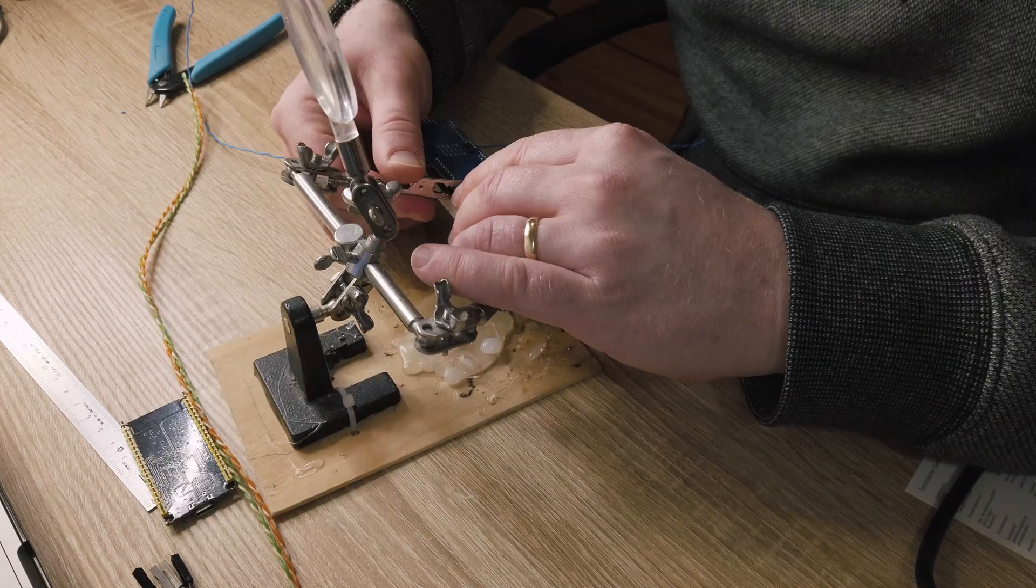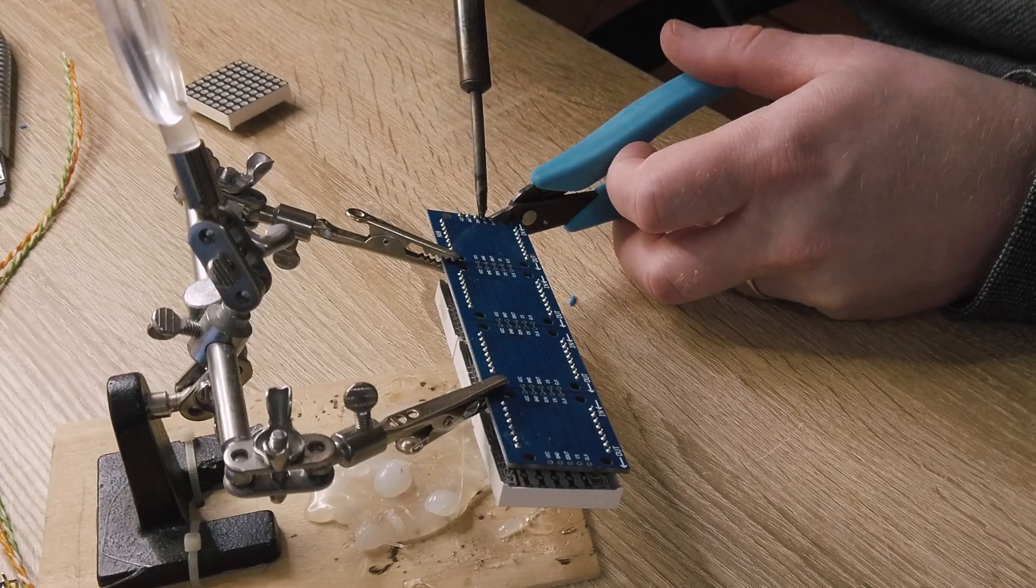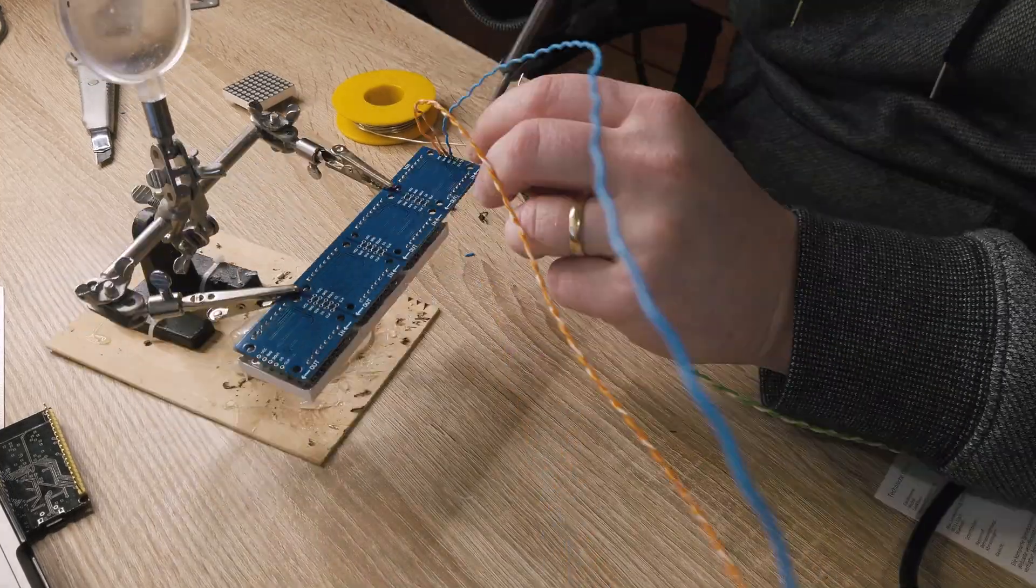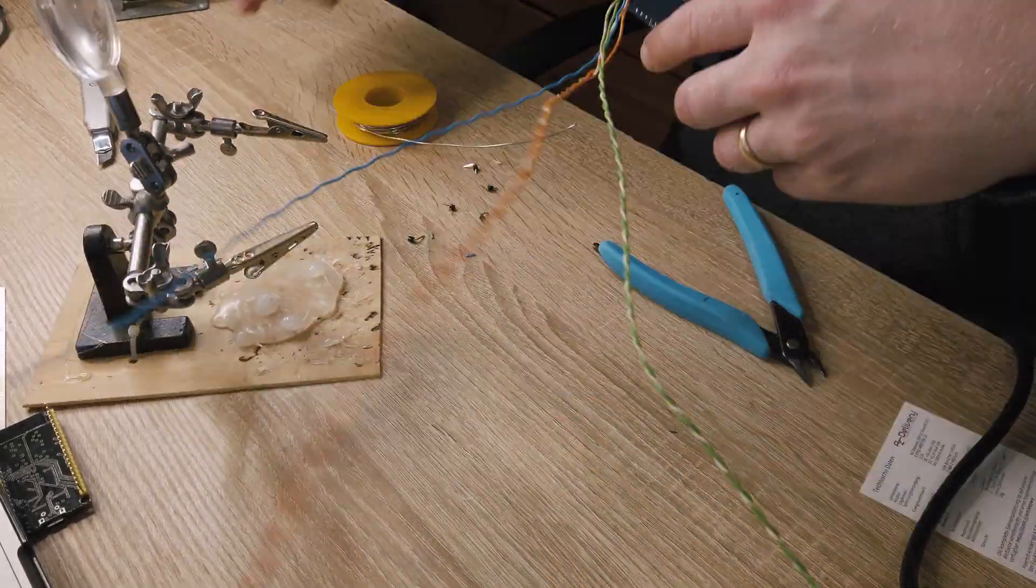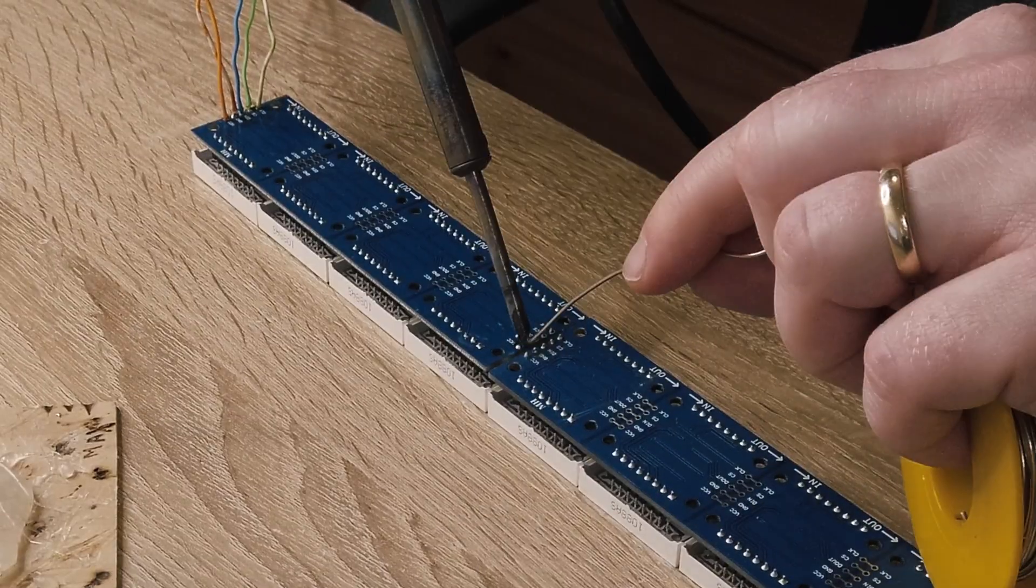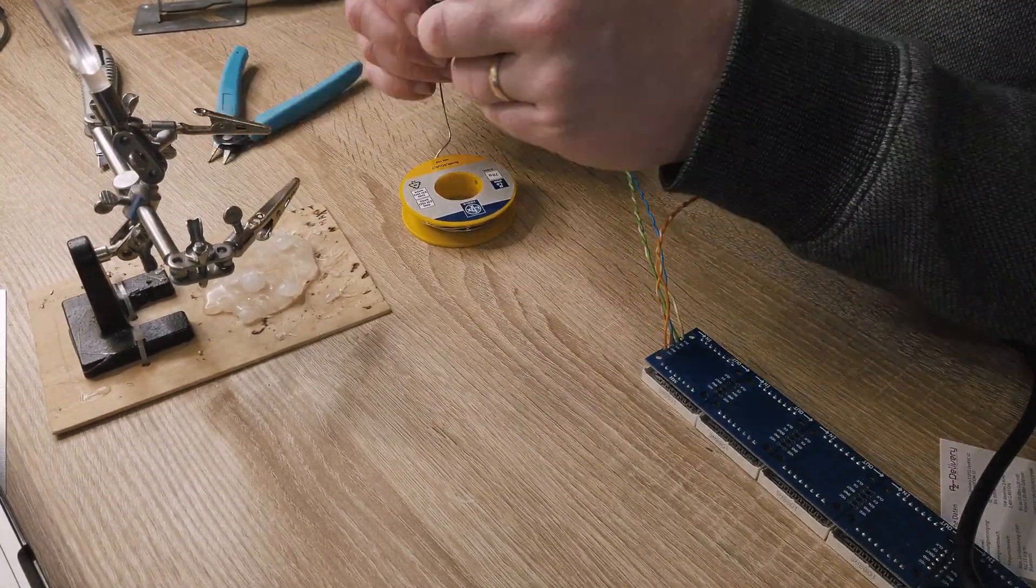While the back of my enclosure is still printing, I can prepare the electronics. I removed the pins that were soldered into the matrix display so I can attach my own wires. Then I connected one more matrix display so I can have eight segments in a row, and connected my display to ESP32.